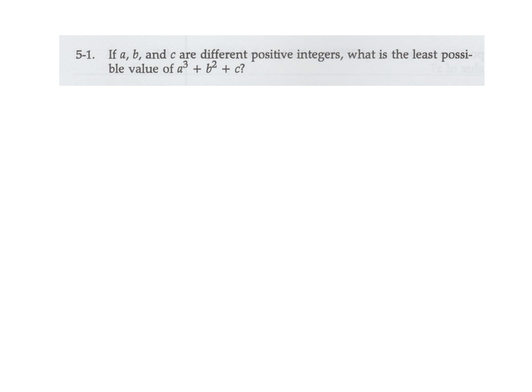If A, B, and C are different positive integers, what is the least possible value of A to the power of 3, B squared plus C? The key in this question was the fact that they said 'different.' That makes it a little bit easier, perhaps.